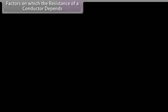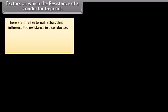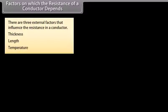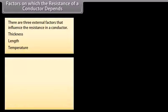There are three external factors that influence the resistance in a conductor: thickness, length, and temperature. There is a fourth factor — the conductivity of the material — which is considered an internal factor rather than an external one.